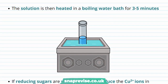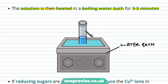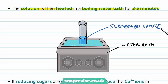After we've added the Benedict's reagent, we have to heat the solution in a boiling water bath for about three to five minutes. The test tube containing the Benedict's and the sample is submerged into the water bath, which will be at about 100 degrees boiling, and it will keep it like this for about three to five minutes.